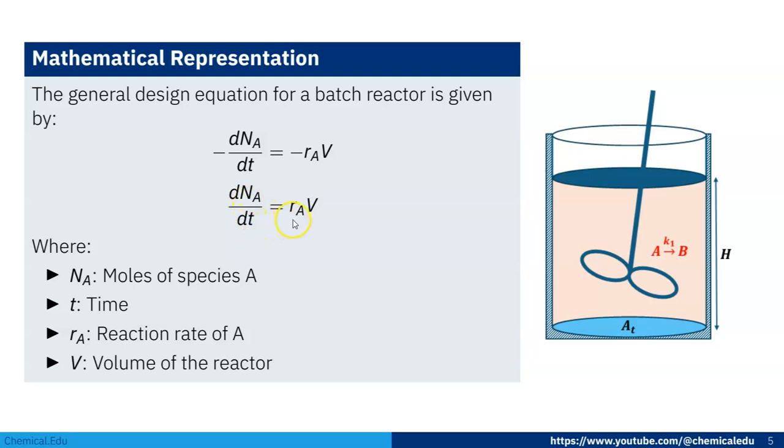dNA/dt is equal to rA·V. So NA is the moles of species A, and then t is the time, and rA is the reaction rate of A, and V is the volume of the reactor. So this is the design equation of batch reactor.